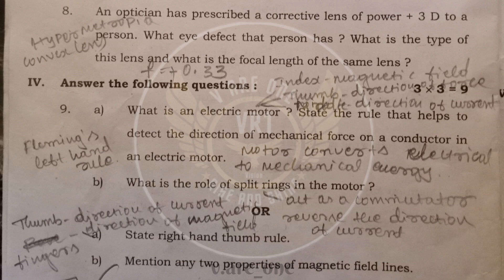Eighth question, an optician has prescribed a corrective lens of power plus 3D to a person. What eye defect that person has and what is the type of this lens? What is the focal length of the same lens? The defect is hypermetropia means farsightedness. And here we are using convex lens to correct the defect. And focal length is plus 0.33.